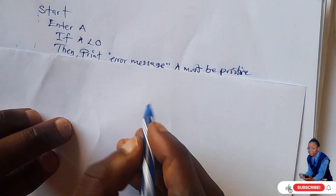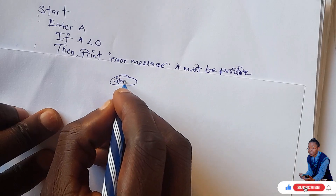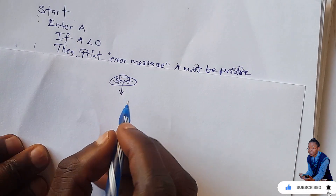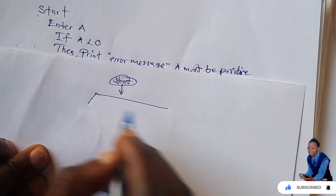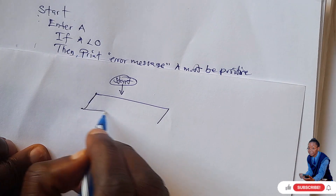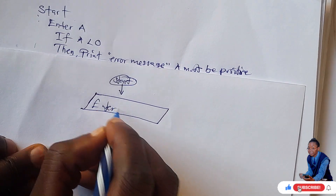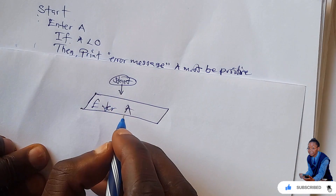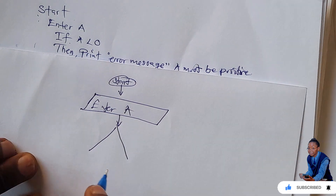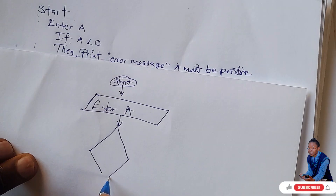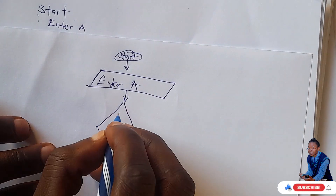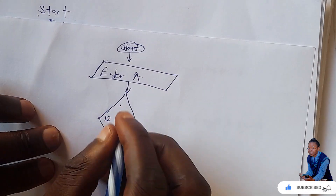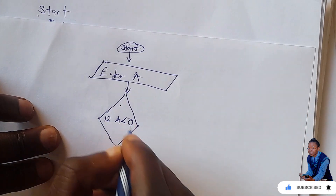We're going to start — the symbol is the oval for start. Then enter A — we write an arrow here, and this is a parallelogram, so we're going to say 'enter A'. Then down here, if A is less than zero, you're going to draw this diamond shape and ask: is A less than zero?